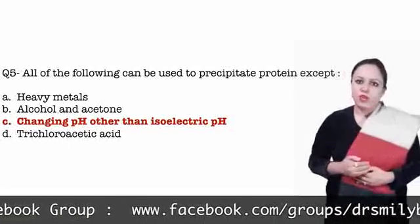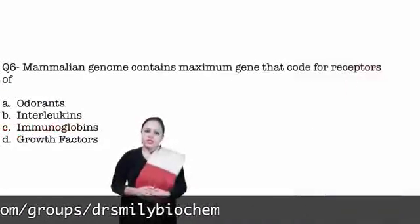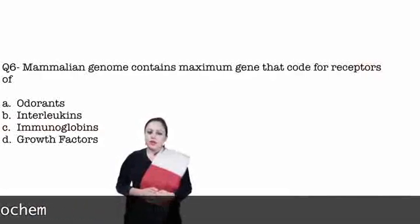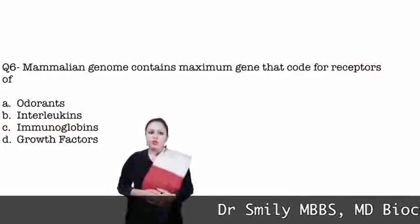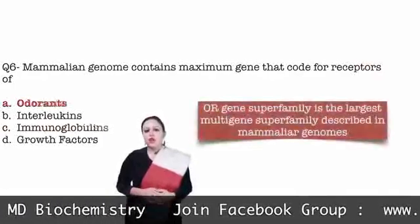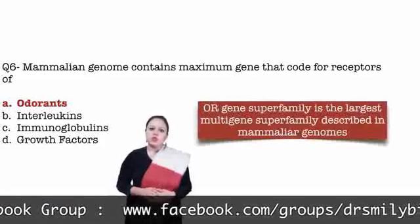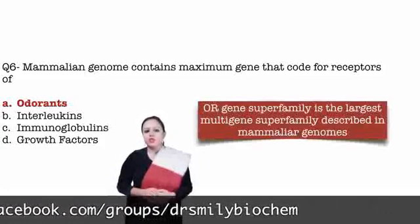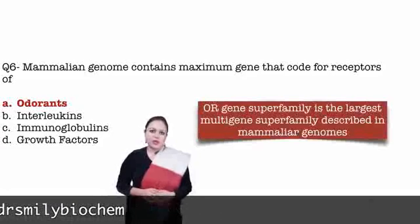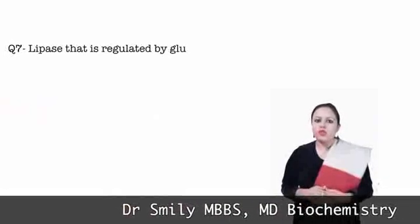Question number 6: the mammalian genome contains the maximum number of genes that code for receptors of — options are odorants, interleukins, immunoglobulins and growth factors. The answer is odorant receptors — the odorant receptor gene superfamily is the largest multi-gene superfamily described in mammalian genomes.